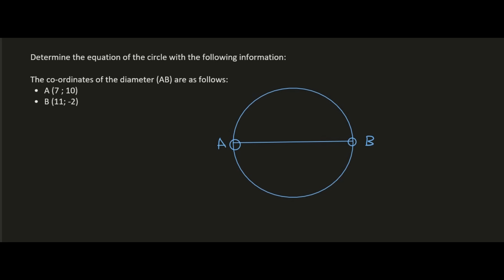If we know that a diameter goes through the center, then surely if we could find the midpoint, that would be the center of our circle. So we can take the coordinates of A and B, use the midpoint formula, and find the center. The midpoint formula is the following: we take 7 plus 11 over 2, and then 10 minus 2 over 2, and that's going to give us (9, 4).